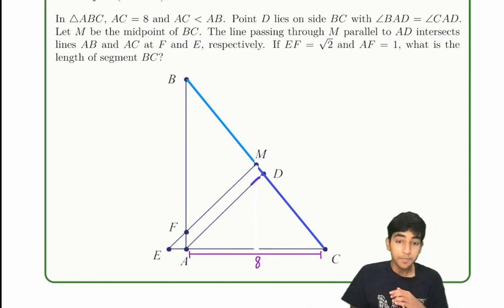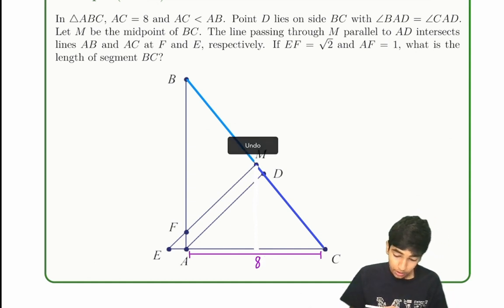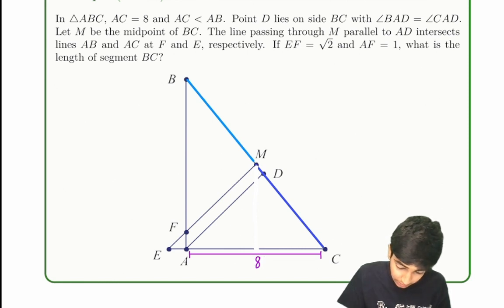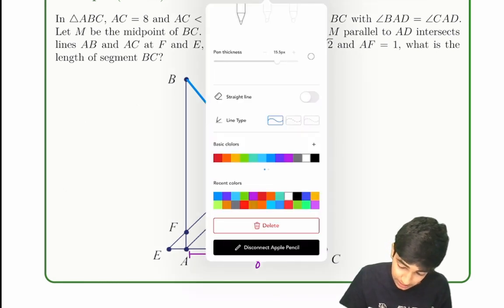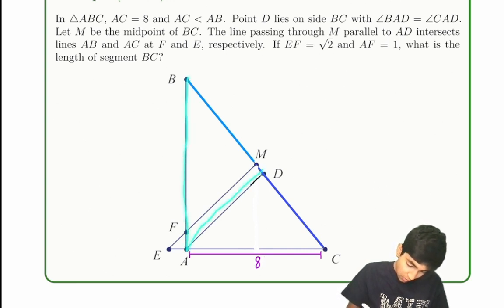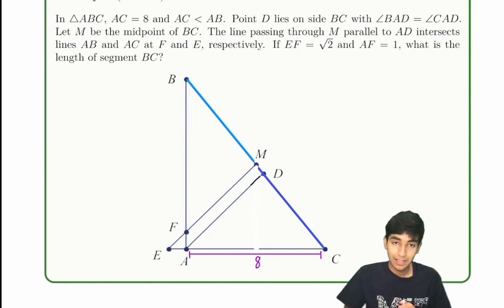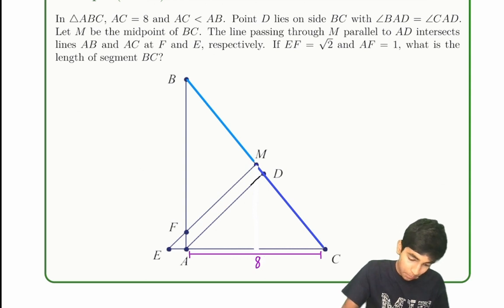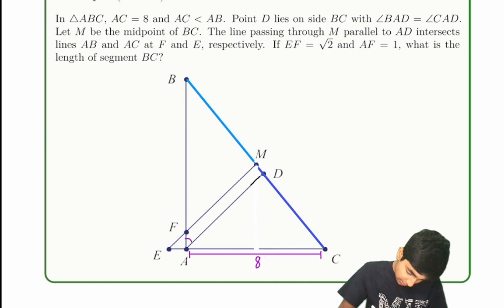We're also given that point D lies on BC such that angle BAD equals angle CAD. So given that those angles are equal, let's call both of these quantities x — this part is x, this part is x, and this part is x as well.